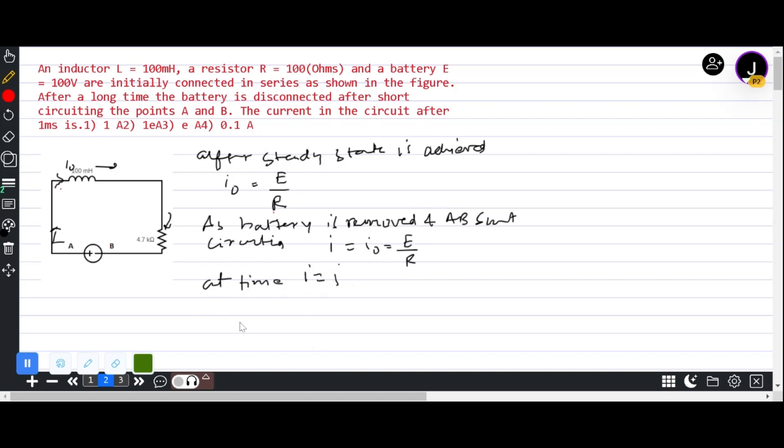Which is minus L di by dt. At time T, the current is i. So L di by dt minus iR equals 0.